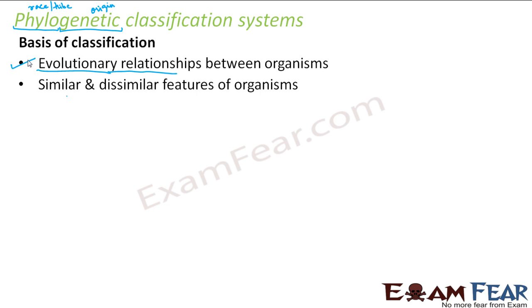This system of classification is based on fossil records. Using fossil records, which appear with time, we can conclude the similarities and dissimilarities between organisms, because fossil records tell us about the different organisms which have existed on the earth. However, there was an issue: with time, new fossil records appear, and whatever was concluded from previous records gets changed or modified. So there was a problem due to this.